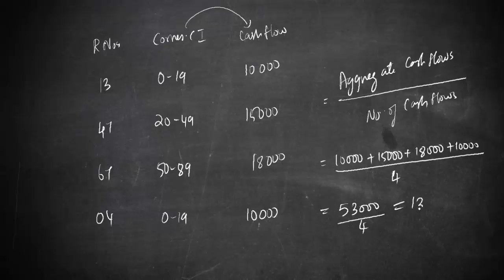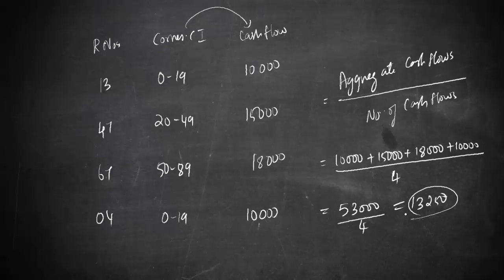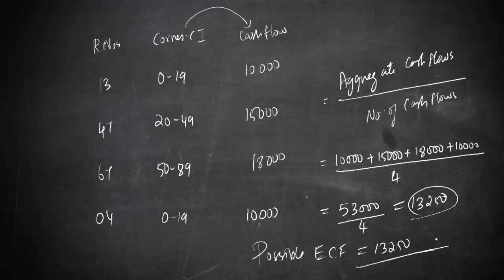53,000 divided by 4 works out to 13,250. So the possible expected cash flow is 13,250. You had four different cash flows with varying probabilities, and by applying the simulation technique — developing the probability distribution, cumulative probability, random class intervals, and generating random numbers — you arrived at a final expected cash flow of 13,250. I've explained the simulation model in a crude way; in the next session I'll give the exact steps for applying it in capital budgeting.